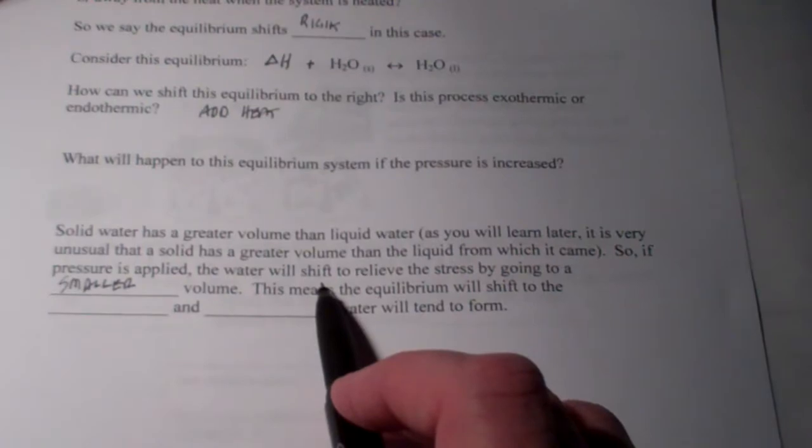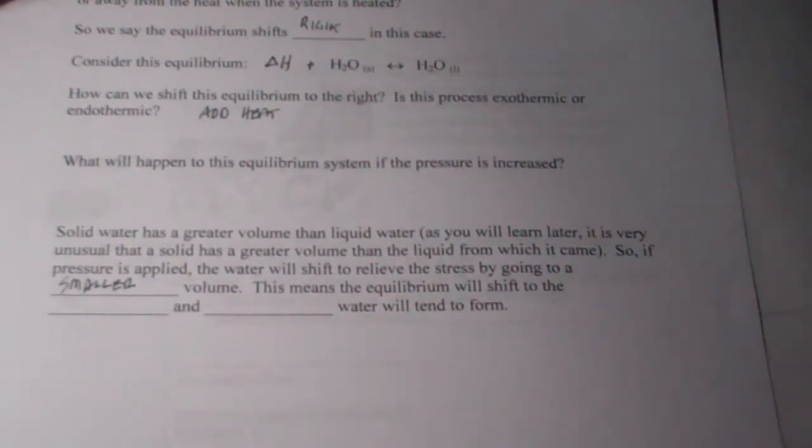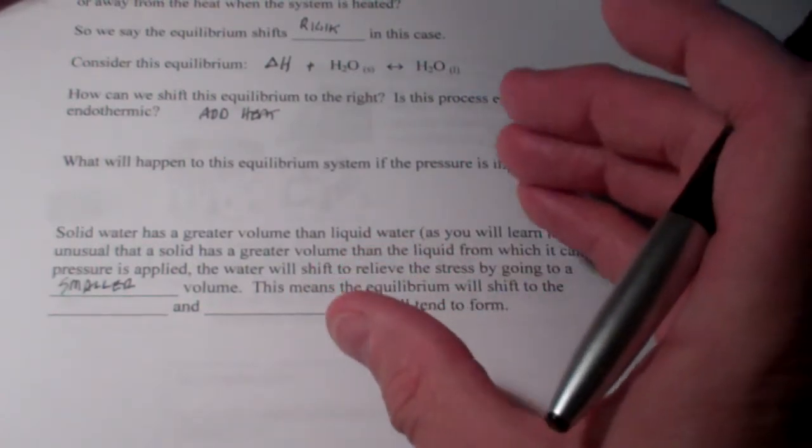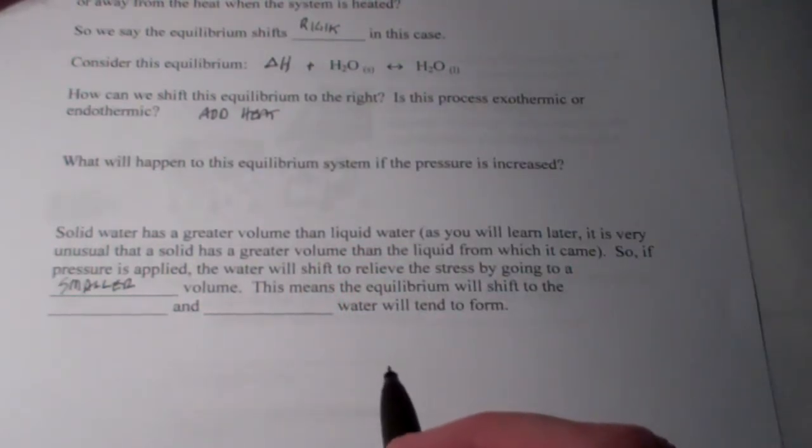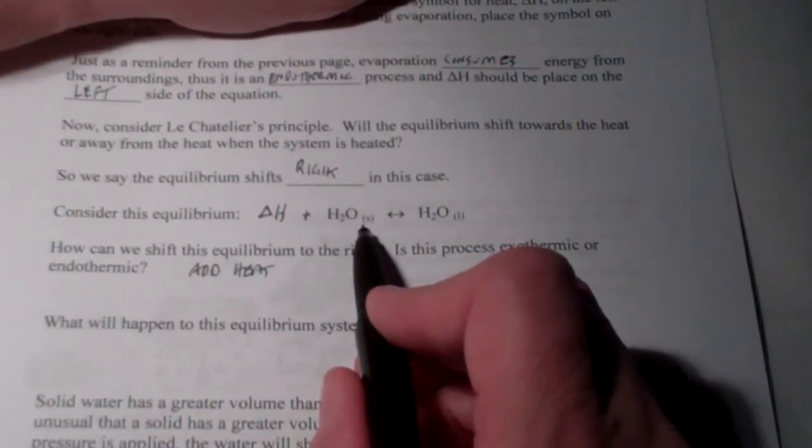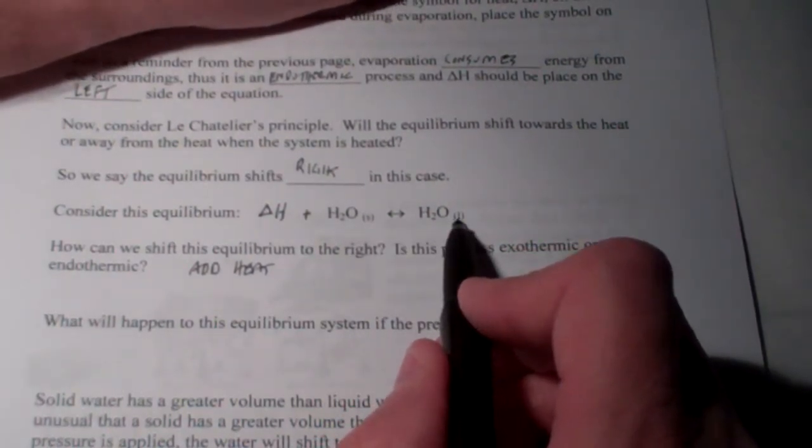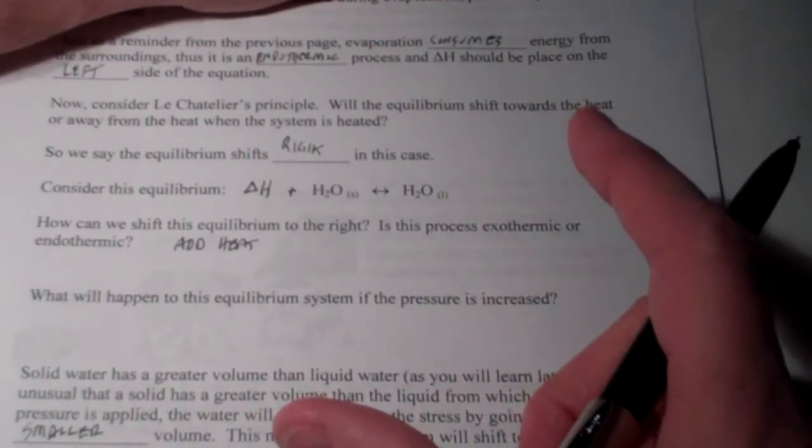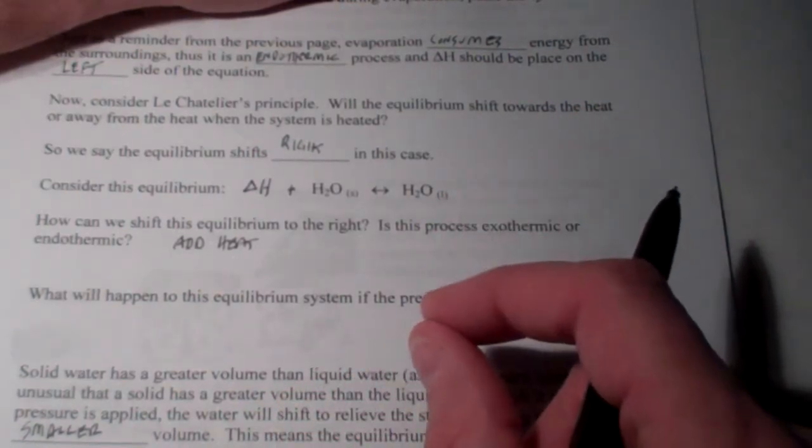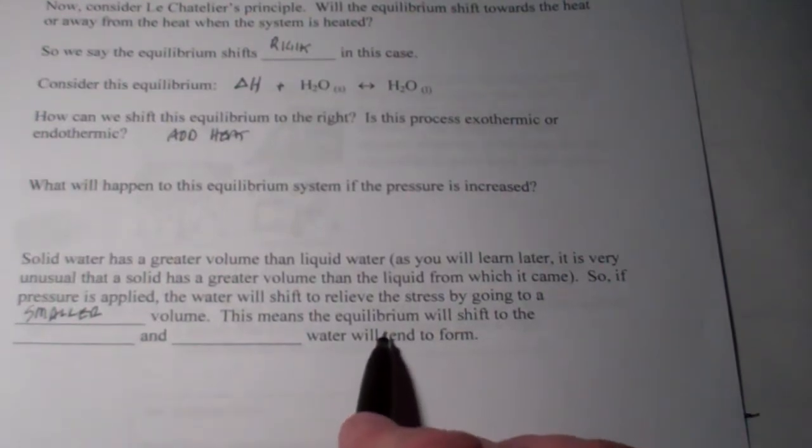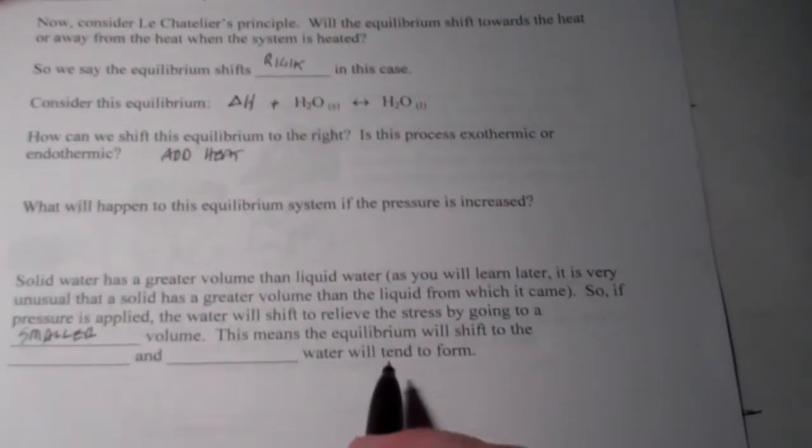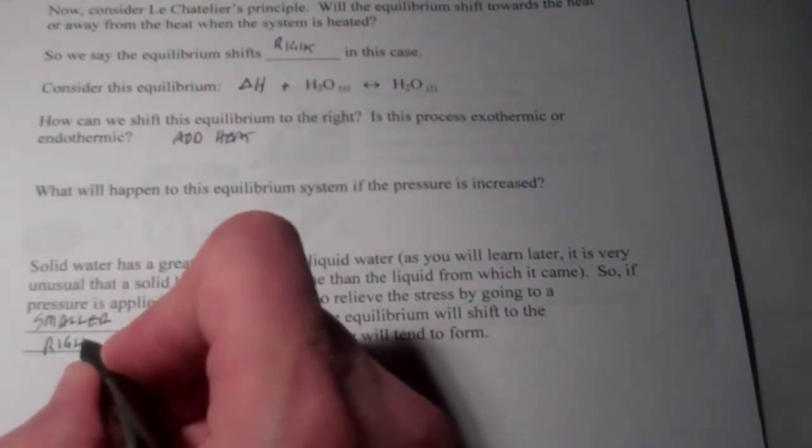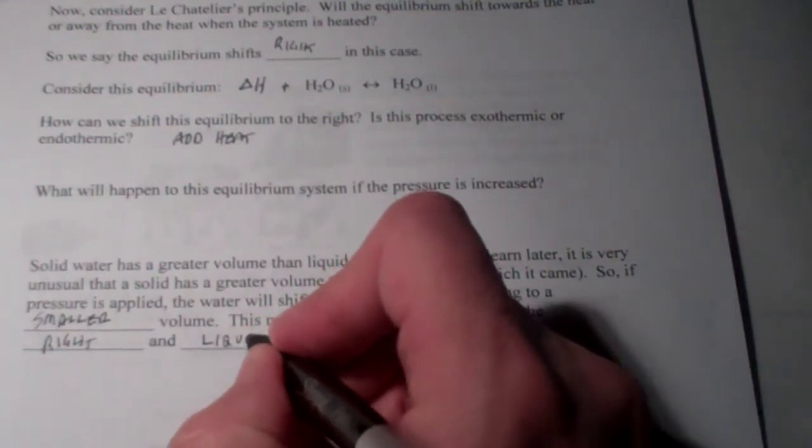Think about this. If we add pressure, is the system going to want to expand? Of course not. That's going to compound the problem. The system is going to want to contract. It's going to want to go to a smaller volume. Well, what has a smaller volume? Does solid water have a smaller volume or liquid water? It turns out that liquid water is more dense than solid water. It has a smaller volume per unit mass. This means if I add pressure to this equilibrium system, the equilibrium will shift to the right and liquid water will tend to form.